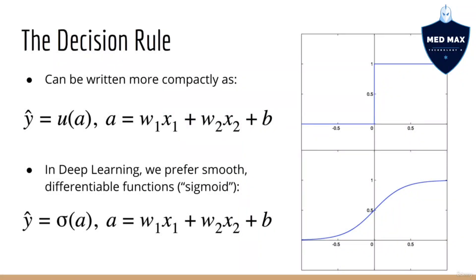Mathematically, you can encapsulate this decision rule using the step function, or if you want to be less formal, you can think of it as the picture that you see here. We call a the activation, and if the activation is greater than 0, we predict 1. Otherwise, we predict 0.